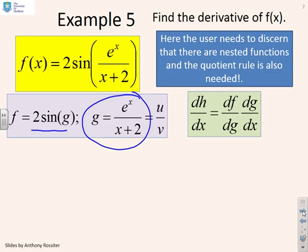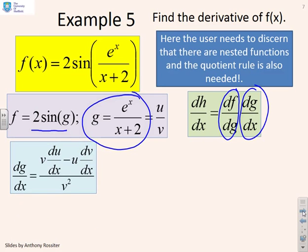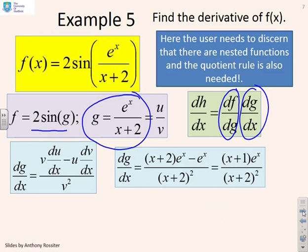So if I want to get dg/dx, which my chain rule tells me I need df/dg and dg/dx, to get dg/dx I need the quotient rule. So dg/dx is going to be v du/dx minus u dv/dx over v squared. Now I've done that quickly here, just to save time. So v is x plus 2, du/dx is e to the x, and then I've got minus u, which is e to the x, times the derivative of x plus 2, which is 1. So I get minus e to the x all over x plus 2 squared. And if I rearrange all of that, this is what I get.